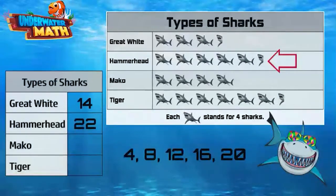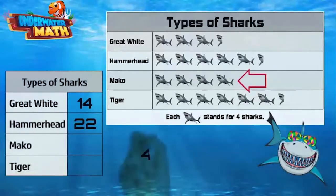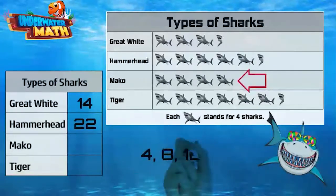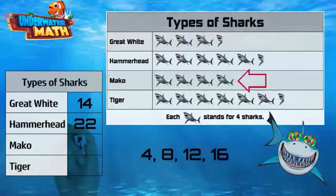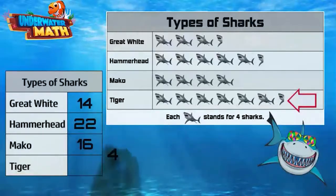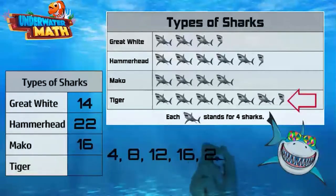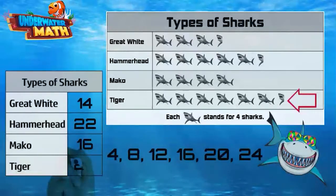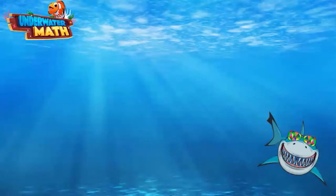Can you try the others? There are four, eight, twelve, sixteen, twenty, plus two is 22 hammerheads. There are four, eight, twelve, sixteen — 16 mako sharks. And there are four, eight, twelve, sixteen, twenty, twenty-four, plus two is 26 tiger sharks. Great job!